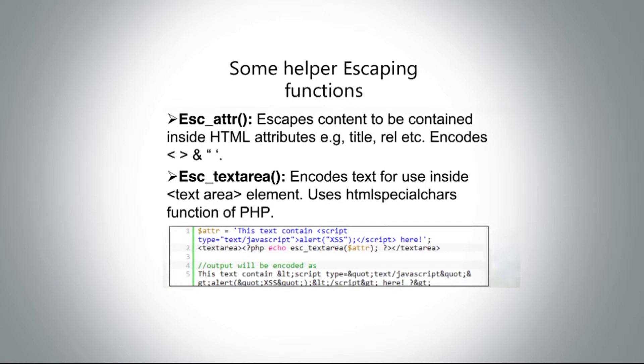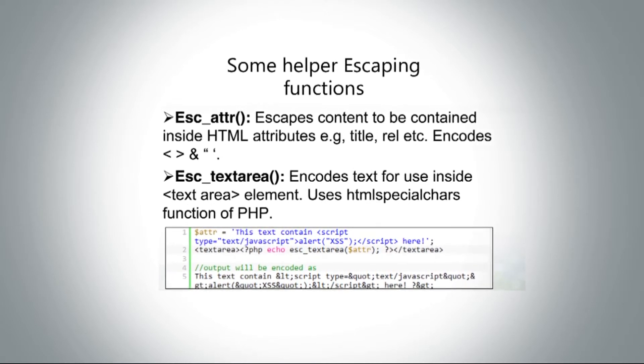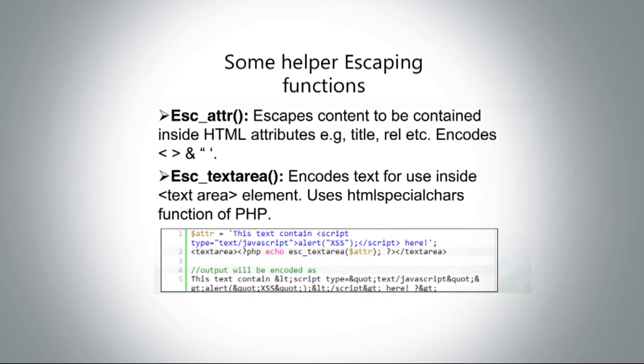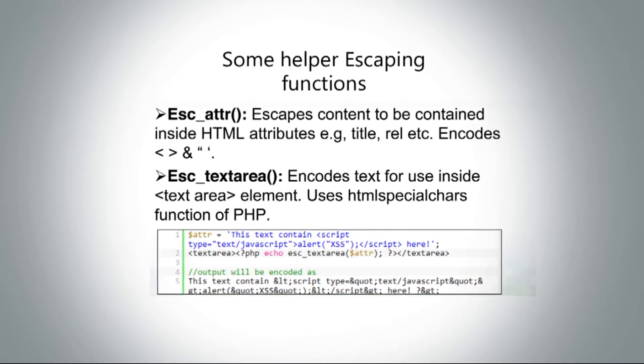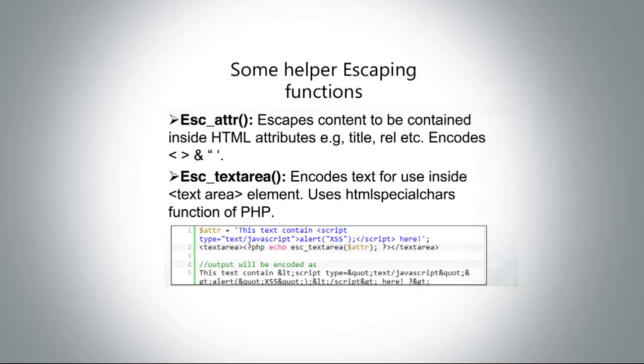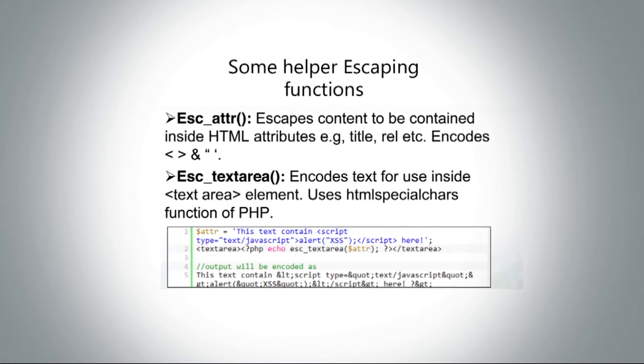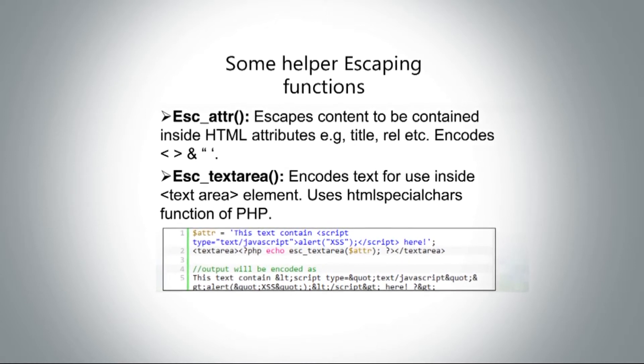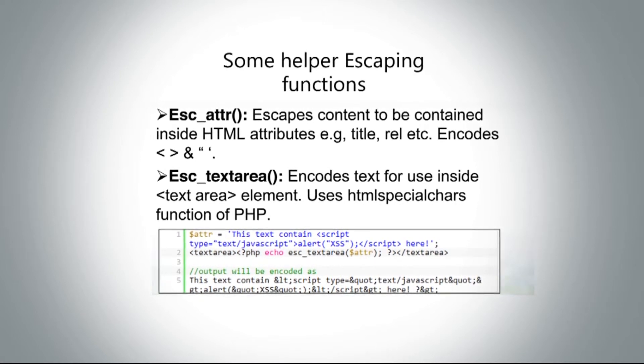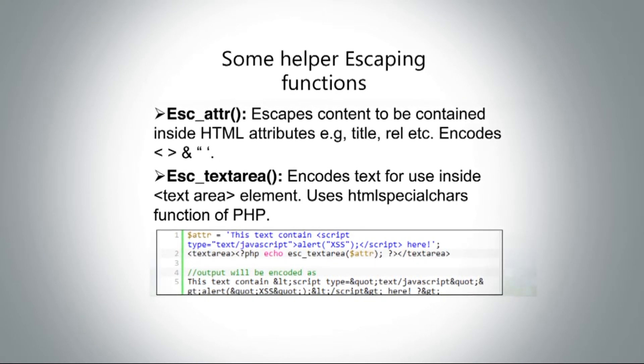I have listed some helper functions. These are escaping functions: `esc_attr()` and `esc_textarea()`. Escaping functions are used when you echo something to the browser before taking the data from the database — instead of just using `echo` in PHP, you escape it. `esc_attr()` converts the greater-than and less-than tags into their corresponding HTML entities and is used to escape attributes. You use it in an href tag or a title tag — you write `echo esc_attr($value)` rather than simply `echo $value`.